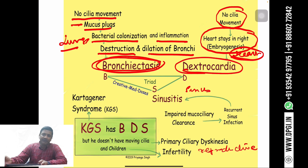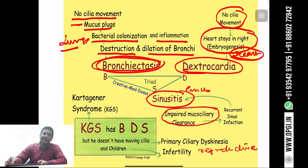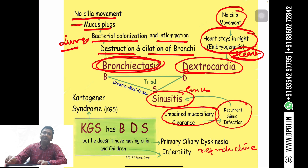Another feature of Kartagener syndrome is sinusitis. When the cilia become immobile, there is impaired mucociliary clearance, which leads to recurrent sinus infections, resulting in sinusitis.